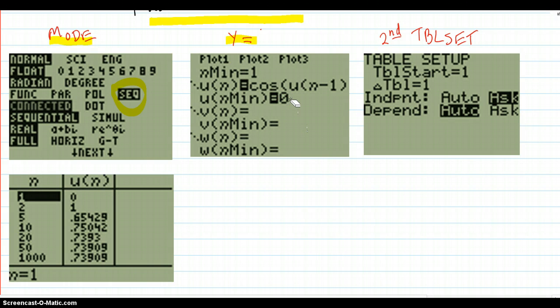I had that on the screen wrong a moment ago. I corrected it—a 0 goes there. That's under Y=. Where you get this u from was the second 7 key, and you got this n from the x, t, theta, n key. It shows up as n because we're in sequence mode.